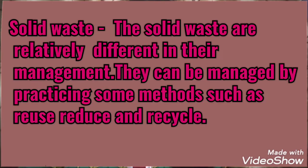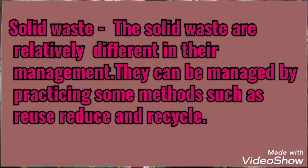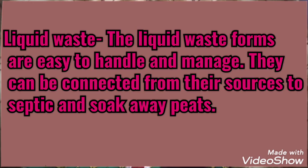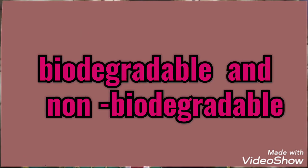What do we mean by solid waste? Solid waste items are relatively different in their management. They can be managed by practicing some methods such as reuse, reduce, and recycle. Liquid waste forms are easy to handle and manage. They can be connected from their sources to septic and soak-away systems. The solid waste is of two types: biodegradable and non-biodegradable.